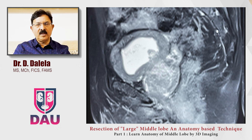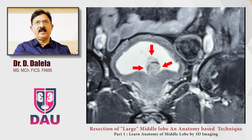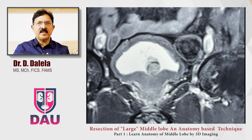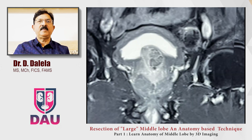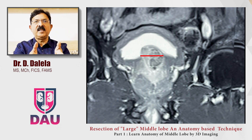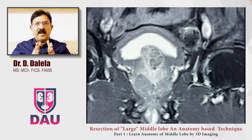In the anterior-posterior dimension, a single picture may give the impression of a narrow-stalk middle lobe. But when you take sections deeper into the bladder towards the posterior wall, the base becomes broad, and as you go more posterior, the base becomes even broader. So the attachment of the middle lobe is not uniform in the anterior-posterior direction — it is narrow towards the bladder neck, and as you go more posterior it becomes wider.